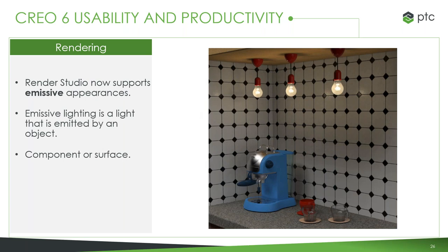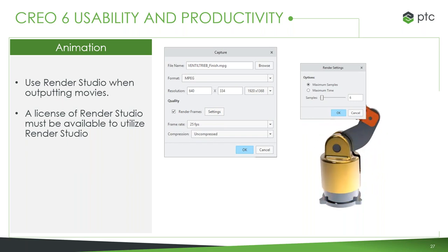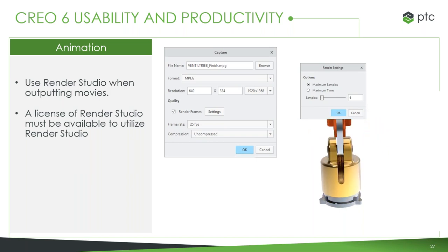When it comes to rendering, Render Studio now has support for emissive appearances — meaning if you have an object emitting light, you can see how it interacts with itself and its surroundings to create very cool and realistic renders. We've also added the option to take your animations and render them in Render Studio, making those animations look very clean and professional. All you need is the Render Studio license and you're good to go.